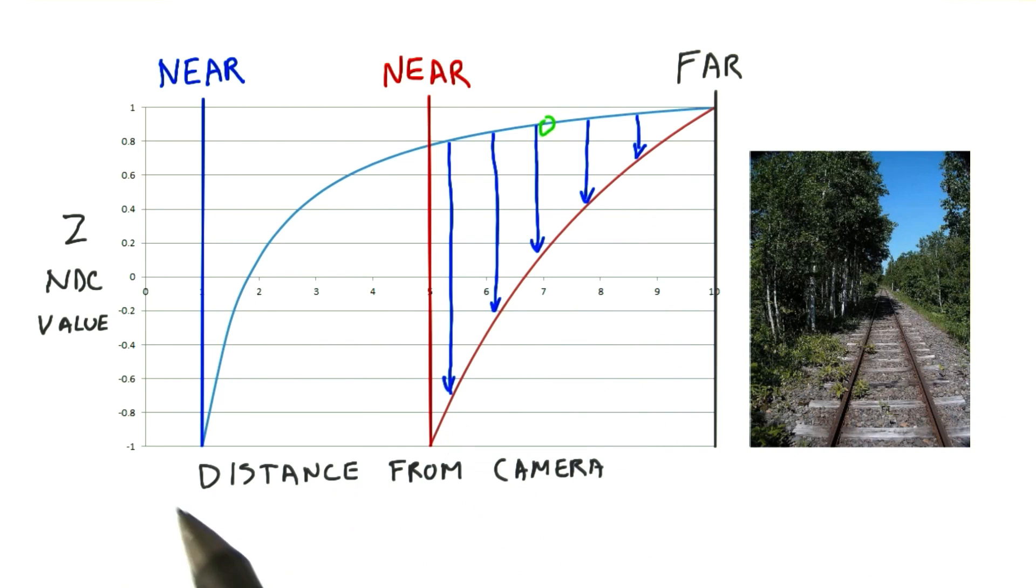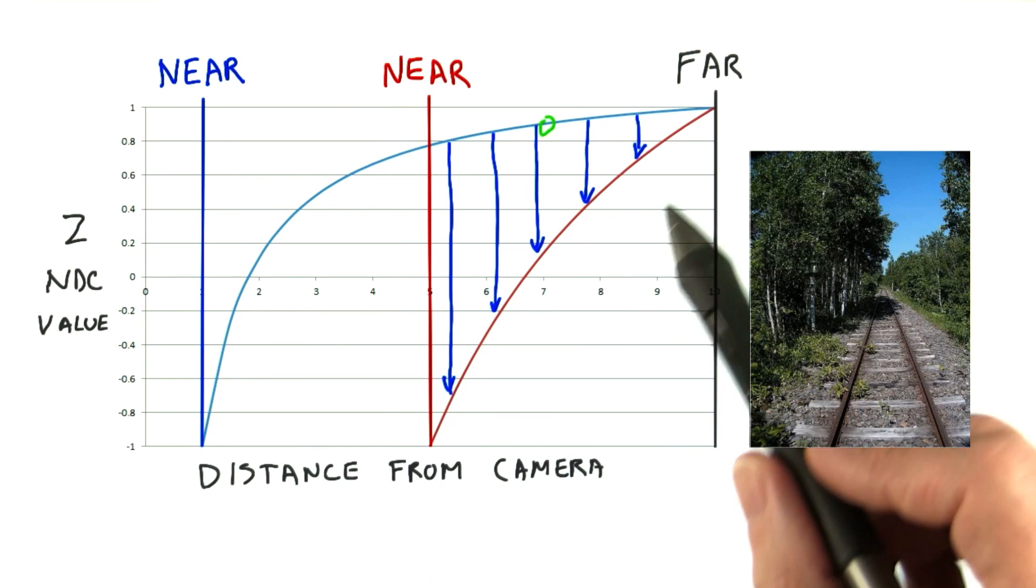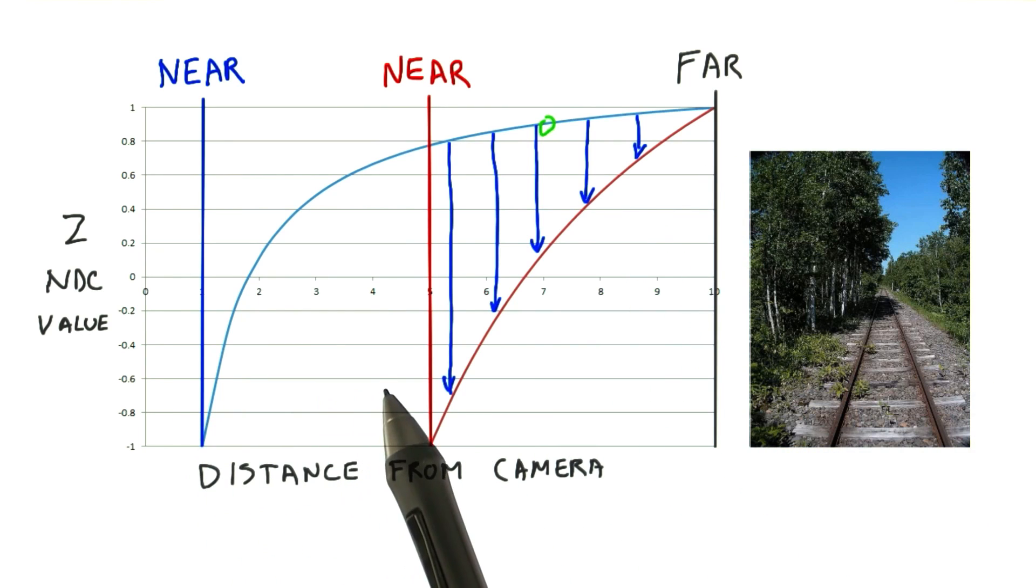The more you increase the near plane relative to the far plane, the slower the NDC z-depth actually goes to 1. The long and short is that moving the near plane away from the camera has a large benefit, much larger than moving the far plane in by a similar distance.